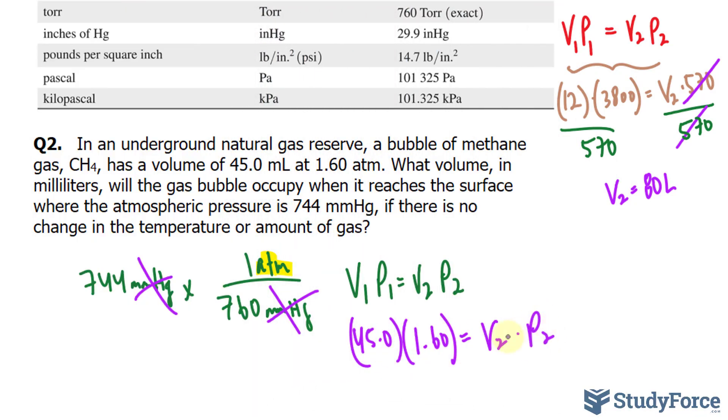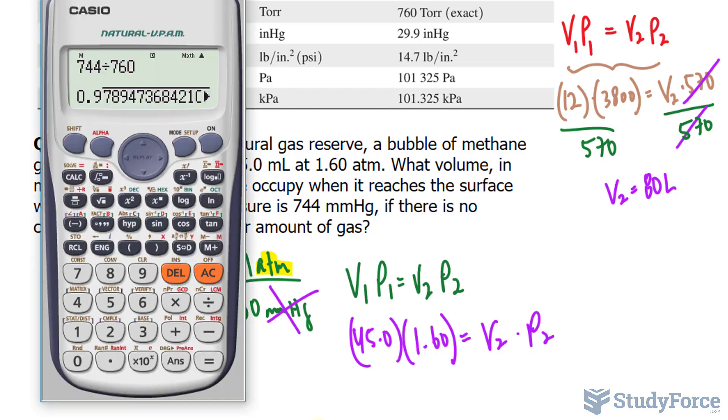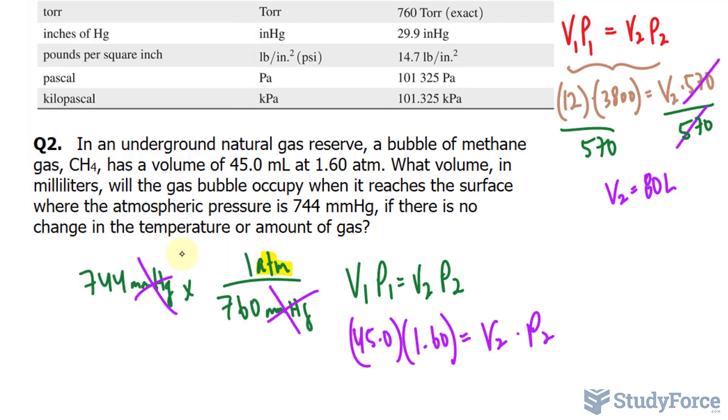And just as before, we divided both sides by that number. So first, I'll take 45 times 1.60, and divide it by that number that was just on our screen, and we end up with, to three significant figures, 73.5 milliliters.